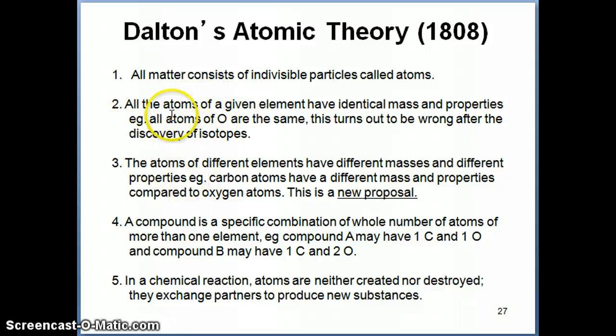A couple of additional concepts related to the atomic theory. First off, all the atoms of a given element have identical mass and properties. Another way of saying this is, if we're talking about atoms of oxygen, we would say that all atoms of oxygen are exactly identical in terms of its mass and its properties, its chemical and physical properties. Now, at that time, that was thought to be true, but we later found out that you can actually have atoms of oxygen that have different masses. This is what we call isotopes, which we'll learn a little bit later in this chapter. But the idea was actually quite correct, that if you have atoms of oxygen, they have similar properties in the sense that they have similar reactivity, similar physical properties, and so on.